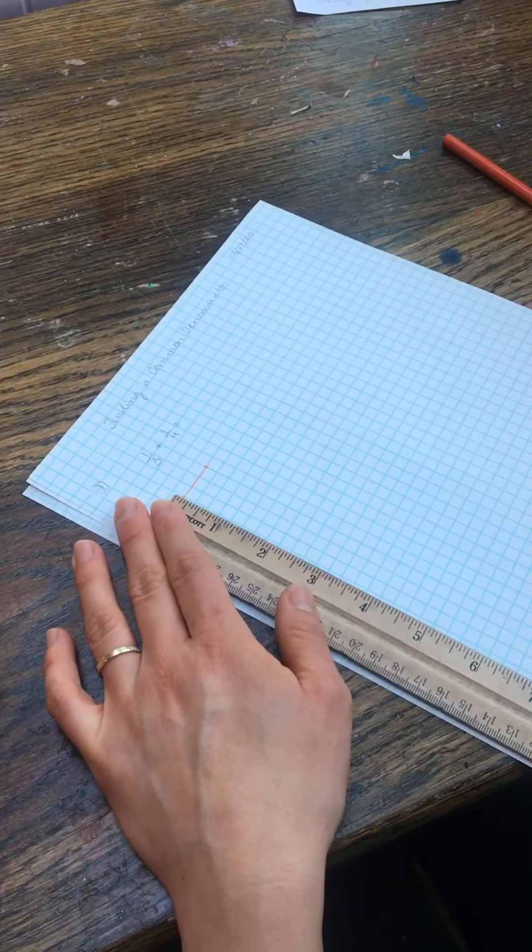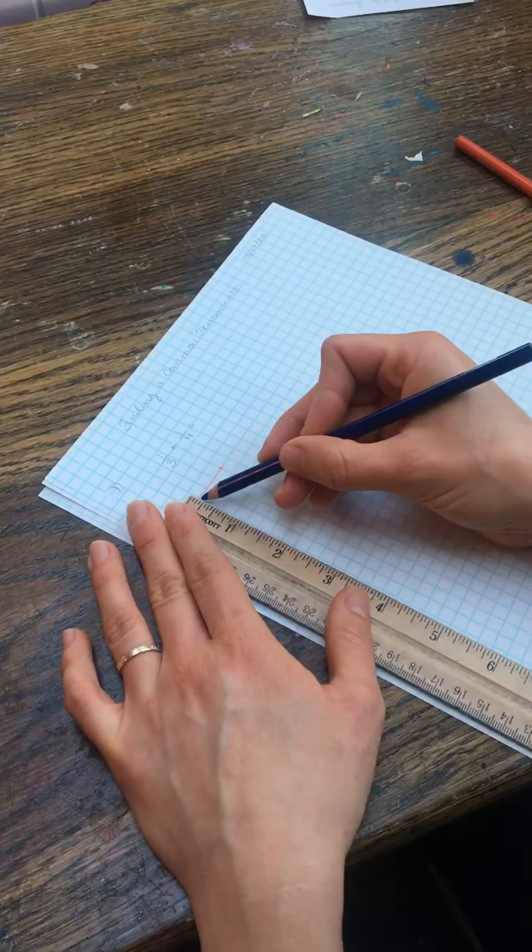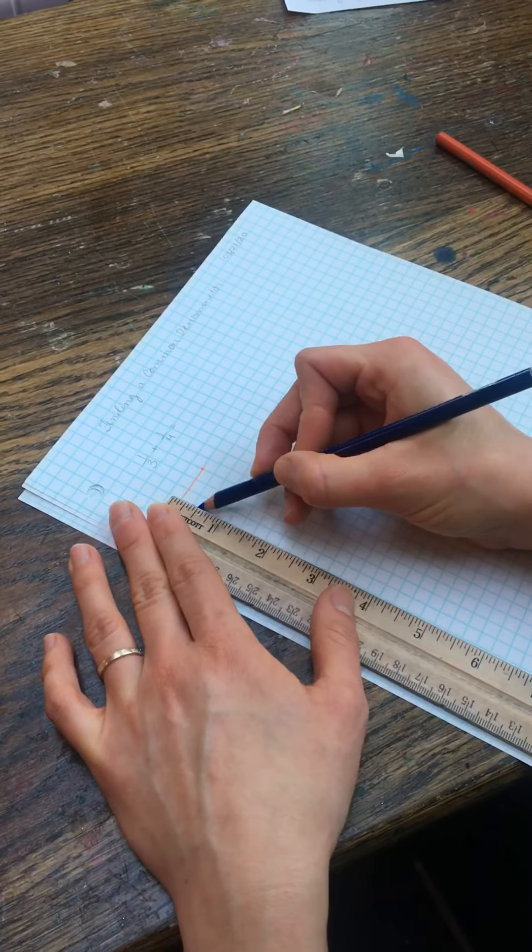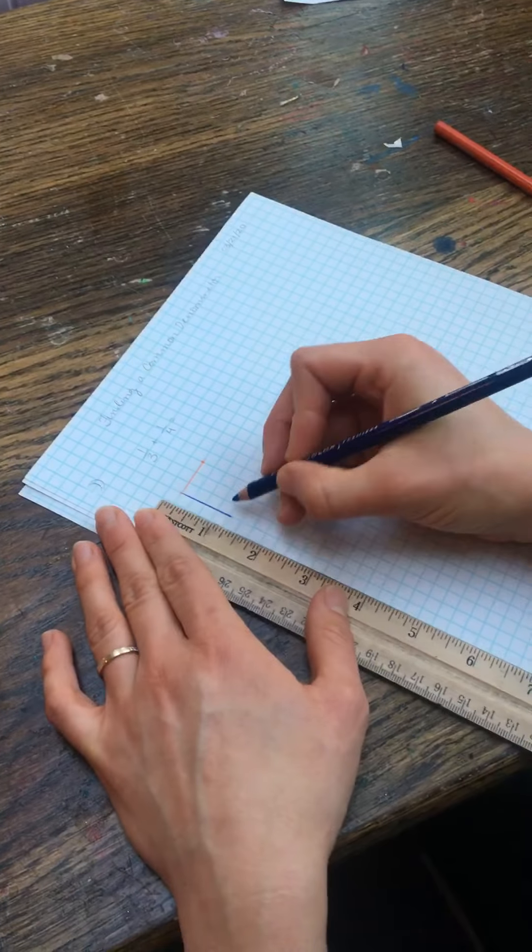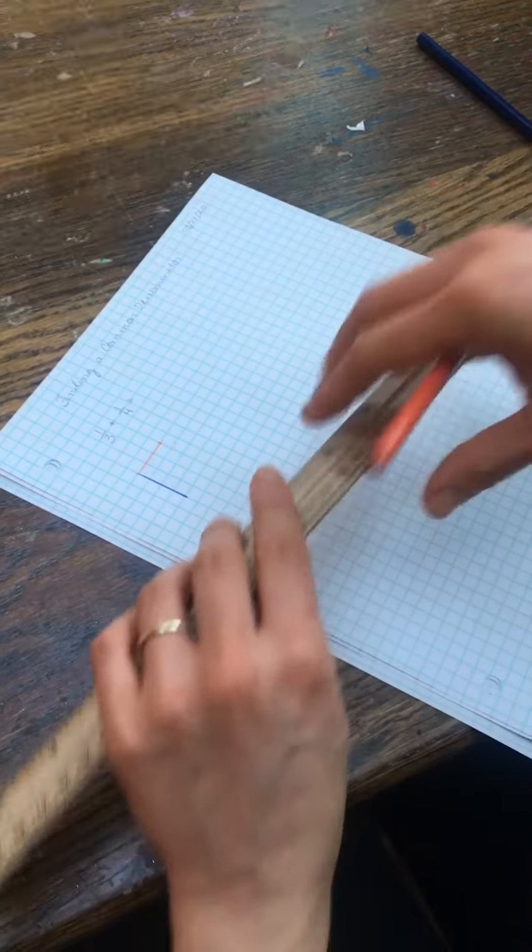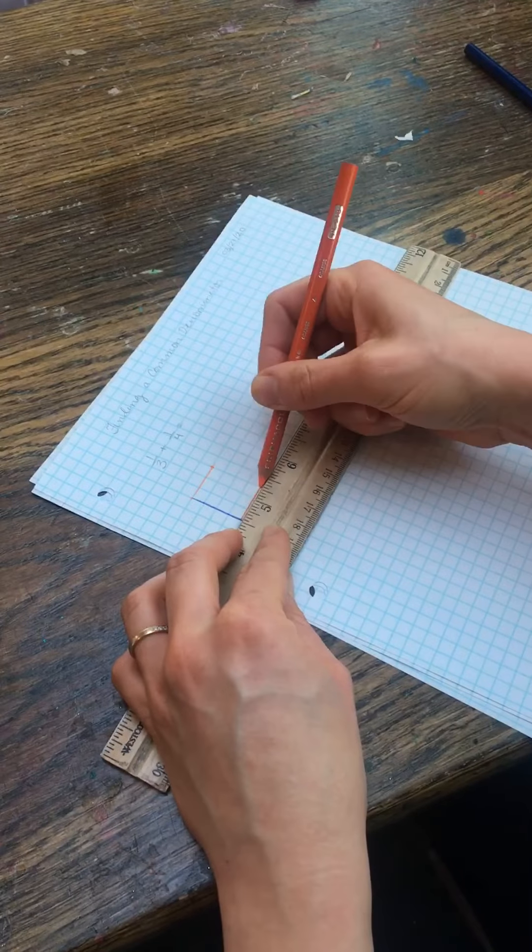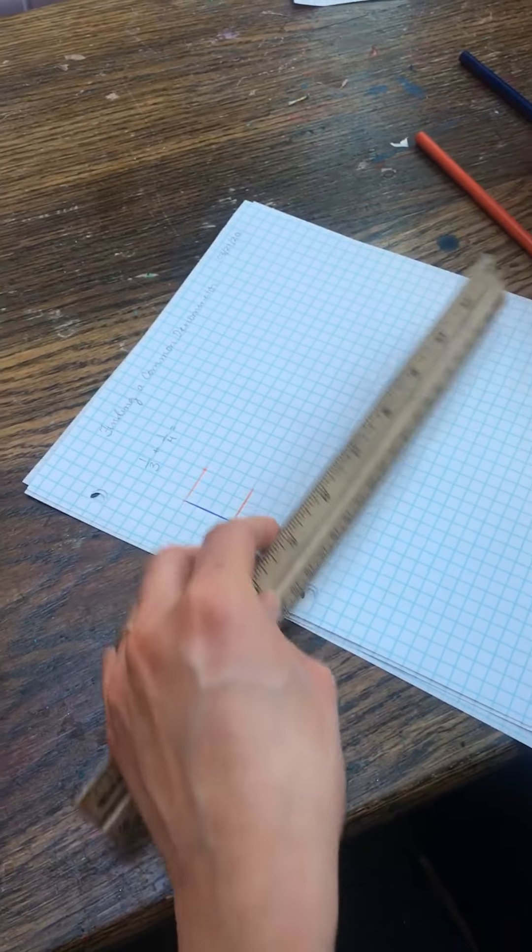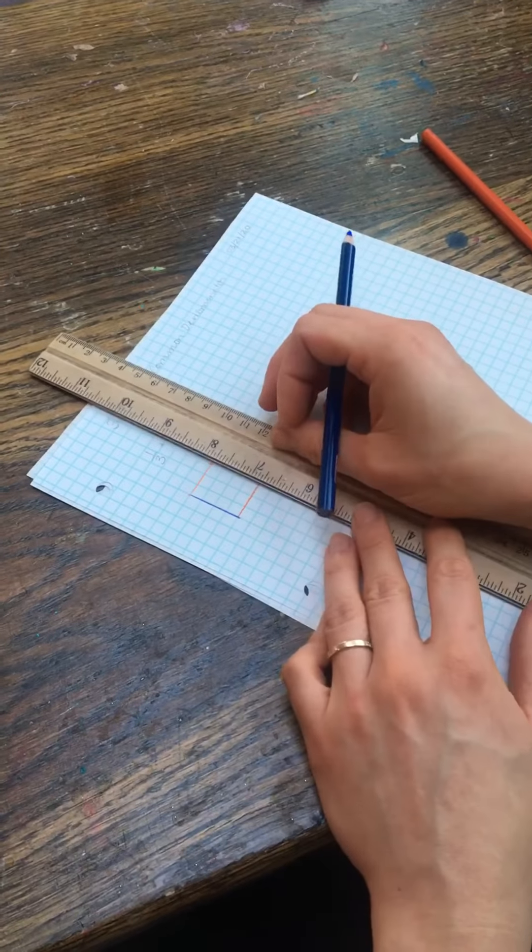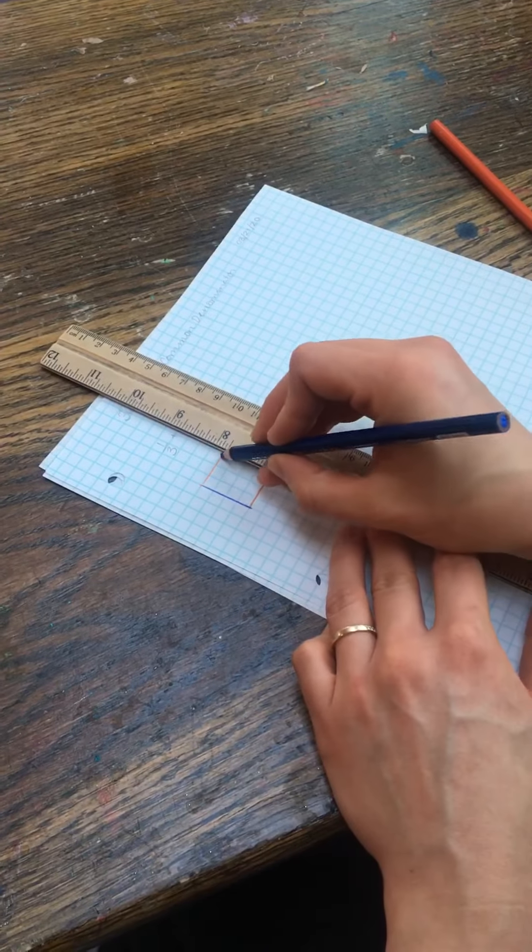Going down vertically, I'm going to count for my fourths. One, two, three, four. I'm going to go across down here again to mark my thirds and on this side to mark my fourths.